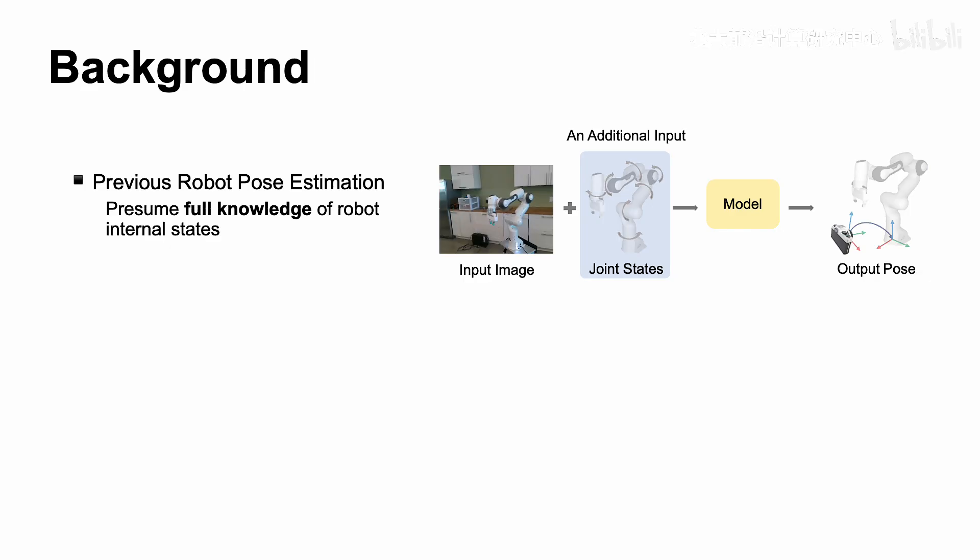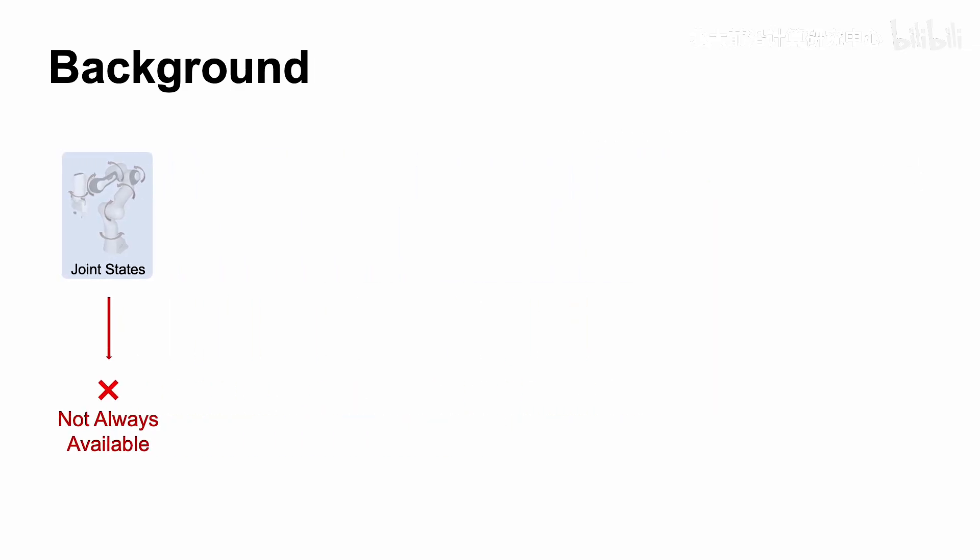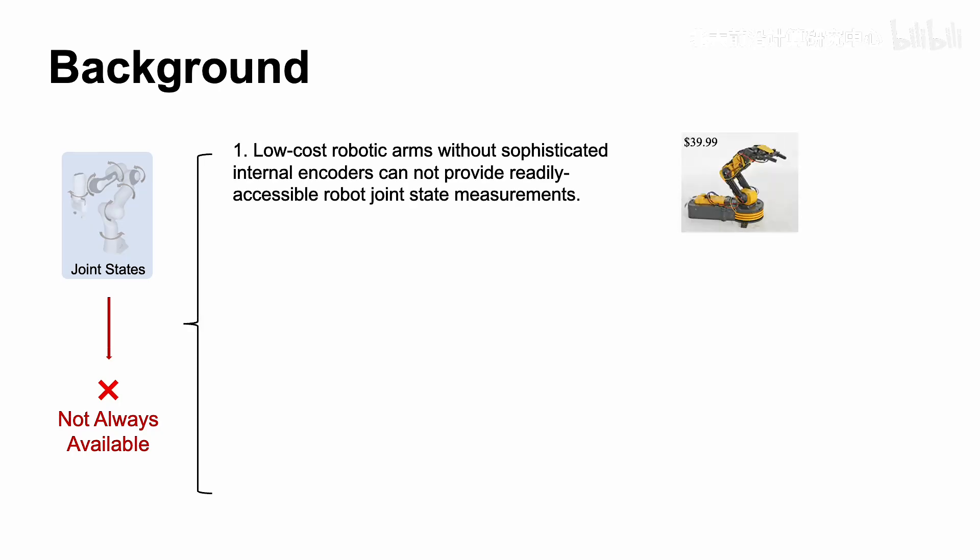However, during estimation in practical scenarios, a known set of ground-truth robot state is not always available. So why is joint state information not always available? For instance, low-cost robotic arms without sophisticated internal encoders cannot provide readily accessible robot joint state measurements for pose estimation.